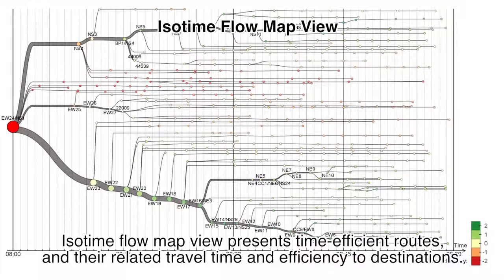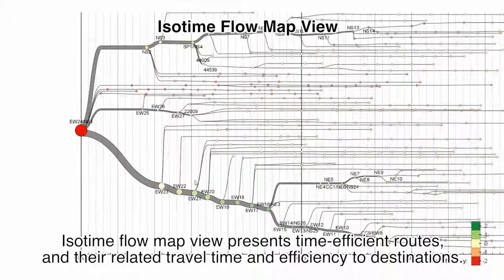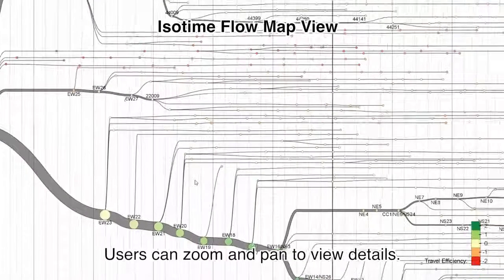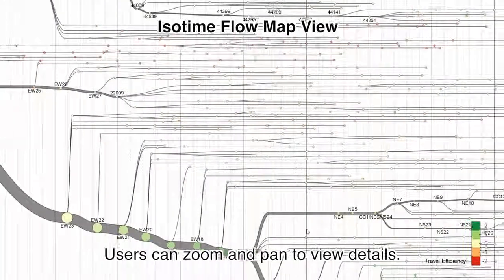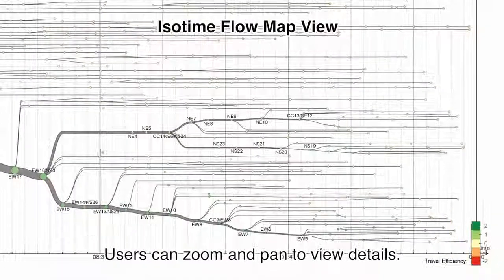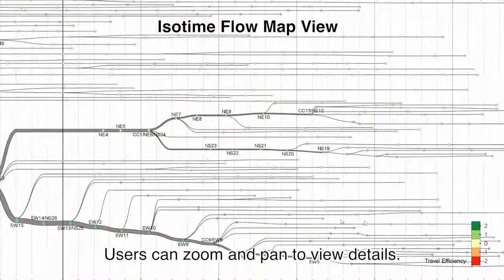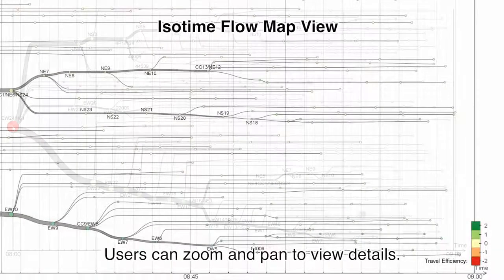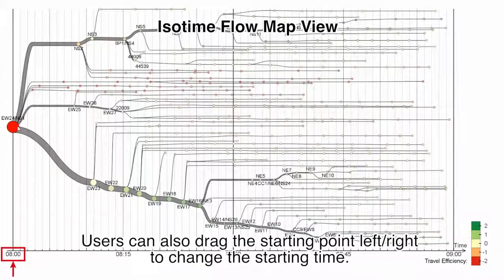The isotime flow map view presents time-efficient routes and their related travel time and efficiency to destinations. Users can zoom and pan to view details, and also drag the starting point left or right to change the starting time.